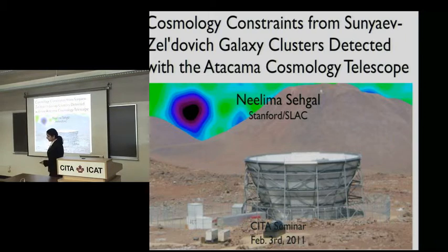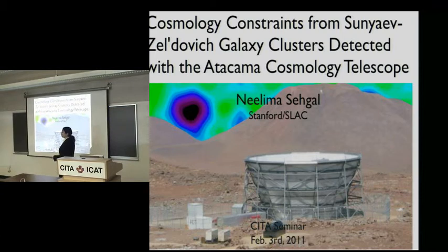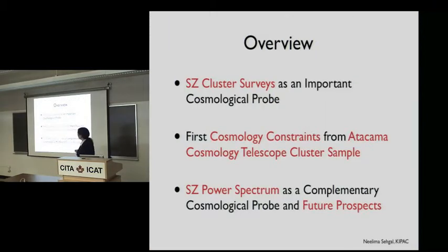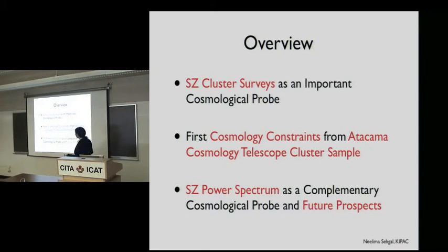I want to try and go through the intro and even the results quickly because I think you're well familiar with ACT, and I want to get to some things that have happened more recently with clusters. This is the ACT telescope, seen here with the ground screen in the Atacama Desert. My intro is going to be brief: reminding you why we care about SZ cluster surveys in the first place, then our first results, some interesting power spectrum results, some interesting cluster results, and future prospects.